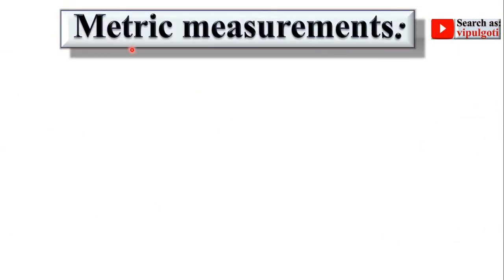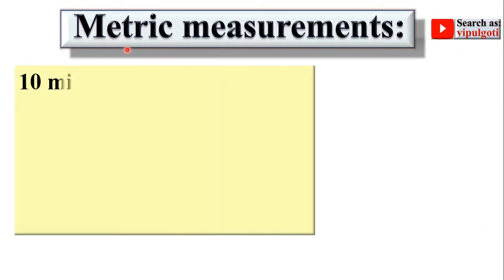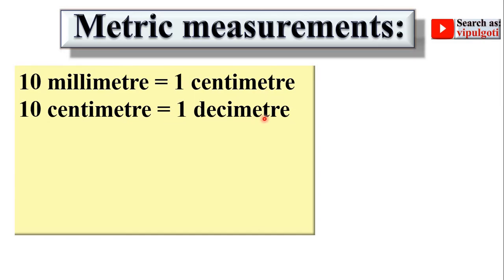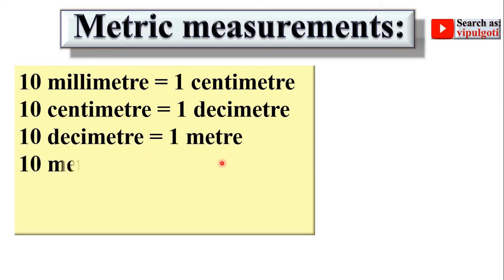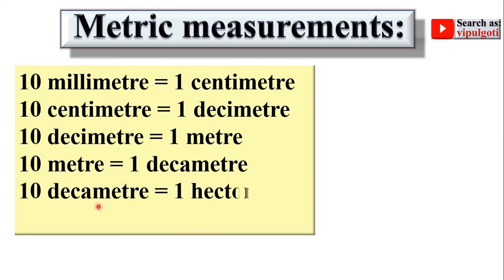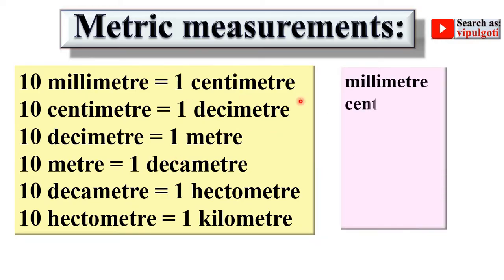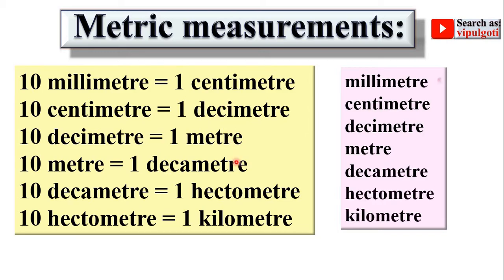Let us start with the theoretical concept of RF. You know that metric measurements have different units. The relations are: 10 millimeter equals 1 centimeter, 10 centimeter equals 1 decimeter, 10 decimeter equals 1 meter, 10 meter equals 1 decameter, 10 decameter equals 1 hectometer, and 10 hectometer equals 1 kilometer. So the sequence is millimeter, centimeter, decimeter, meter, decameter, hectometer, kilometer — ascending order, each multiplied by 10.